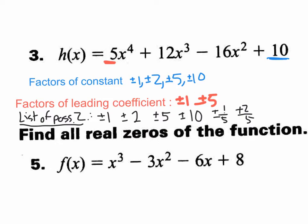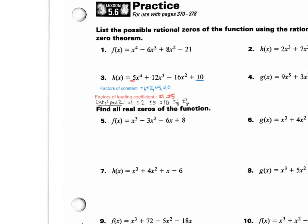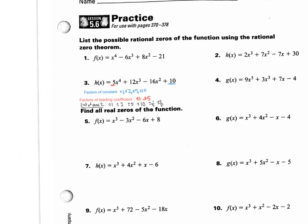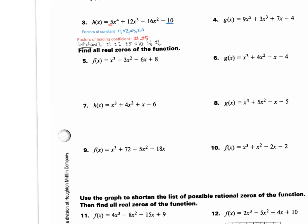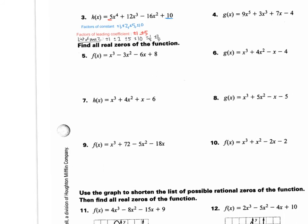And, of course, if this function, if the a value were 1, then it would be way easier because you wouldn't have denominators and it would just be that list right there. Anyways, let's move on to a different type of question on this worksheet. How about down here where it says find all the real zeros? Okay, so let's practice doing that.